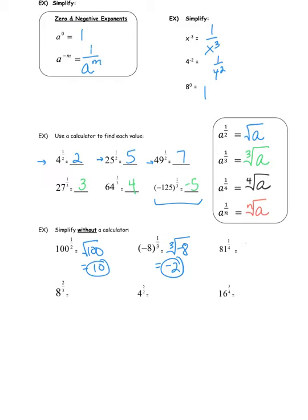81 to the one-fourth power is the fourth root of 81. You could figure it out by guessing. It's not going to be 2, because 2 times 2 is 4, times 2 is 8, times 2 is 16 — that's not 81. Try 3: 3 times 3 is 9, times 3 is 27. Is 27 times 3 equal to 81? It absolutely is. So the answer is 3.